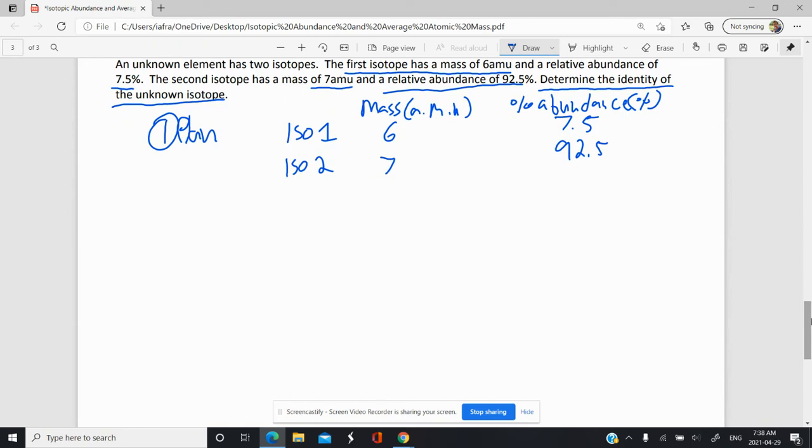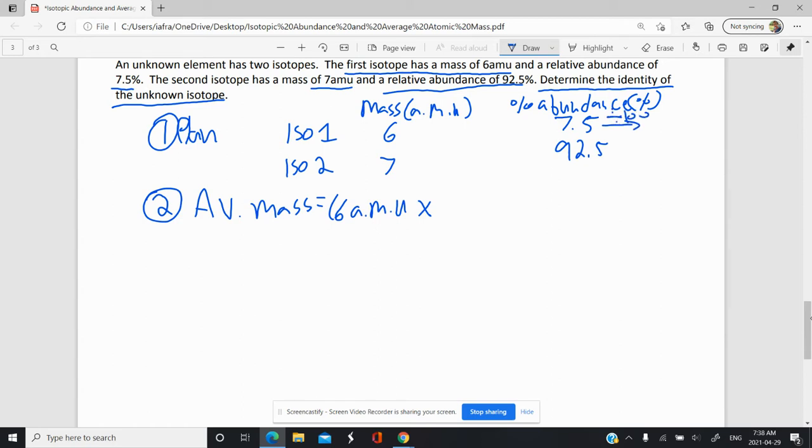So what we want to do is calculate the average atomic mass. So that'll be our first real calculation step. The average mass is going to be equal to the mass of the first isotope, so 6 AMU, times the percent abundance. So don't forget, this is divided by 100 here.